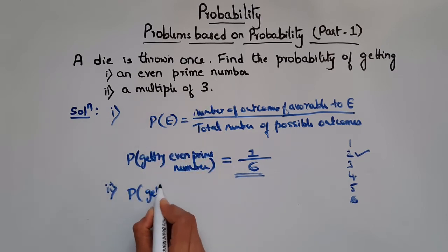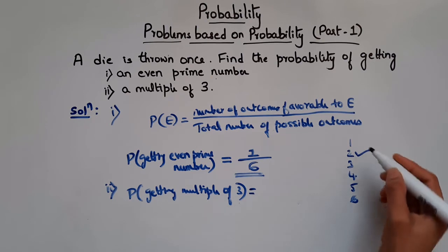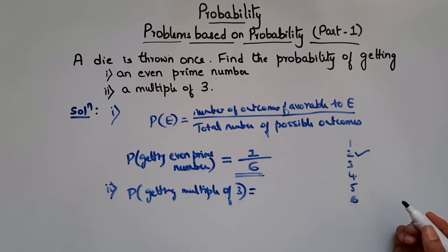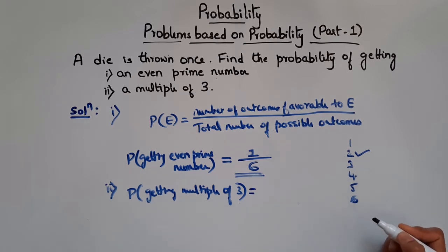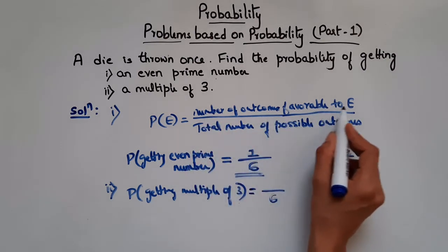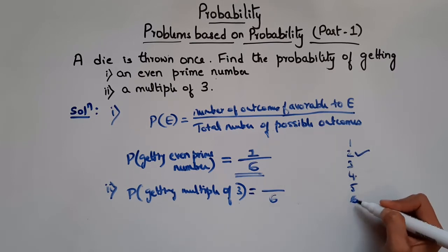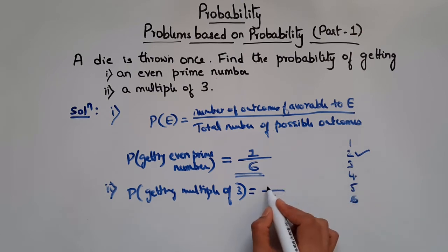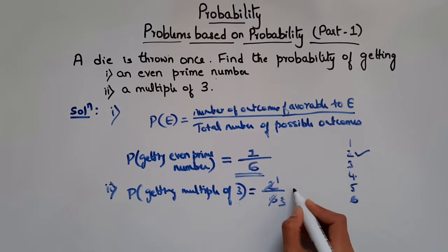Now let's see the second part. We have to find the probability of getting a multiple of 3. In the dice we have 1, 2, 3, 4, 5, 6. The multiples of 3 are 3 and 6, so there are 2 favorable outcomes. The total number of possible outcomes is 6. So probability of getting a multiple of 3 is 2 by 6, which equals 1 by 3.